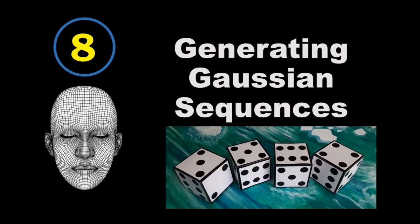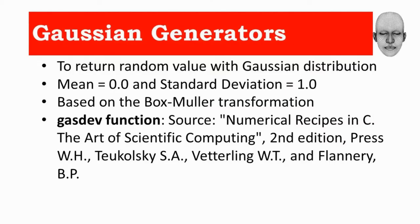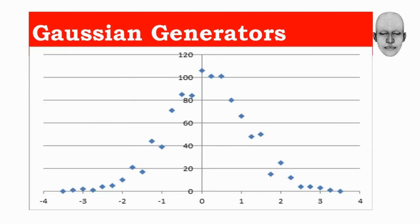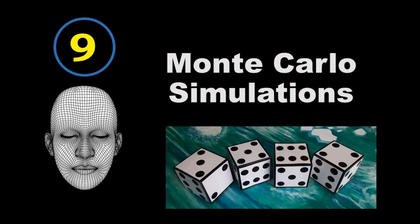To generate Gaussian sequences — random sequences with a Gaussian distribution having mean 0.0 and standard deviation 1.0 — one implementation comes from the book Numerical Recipes in C: The Art of Scientific Computing by Press, Teukolsky, Vetterling, and Flannery. It is based on the Box-Muller transformation. The code is in the accompanying code files; the output of the Gaussian generator is shown here.